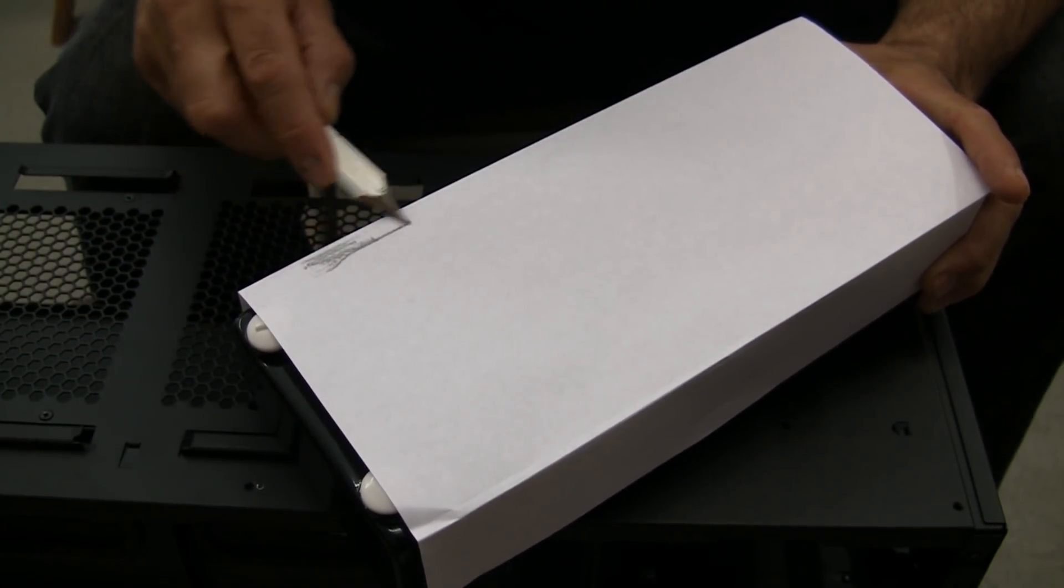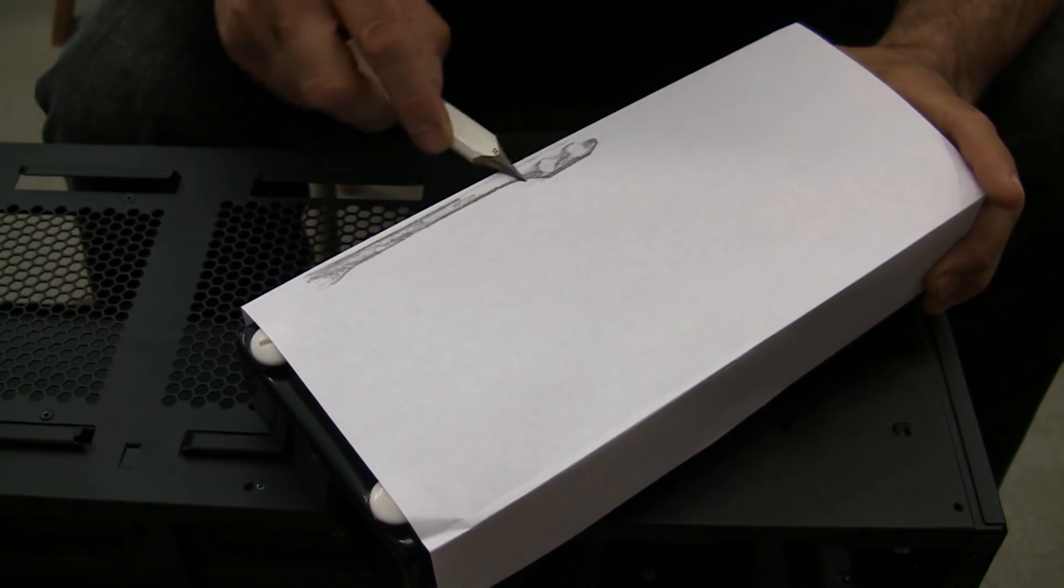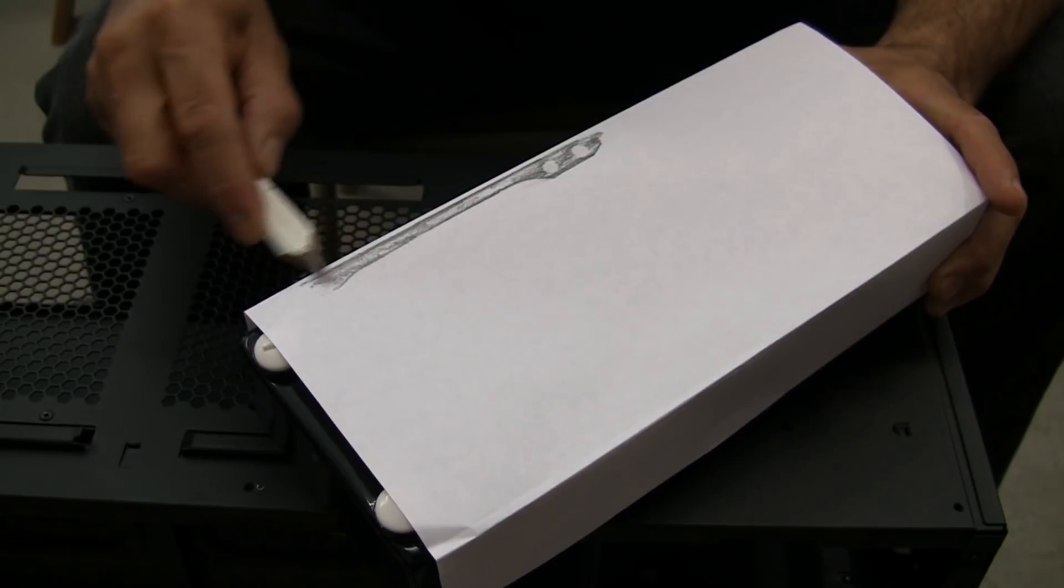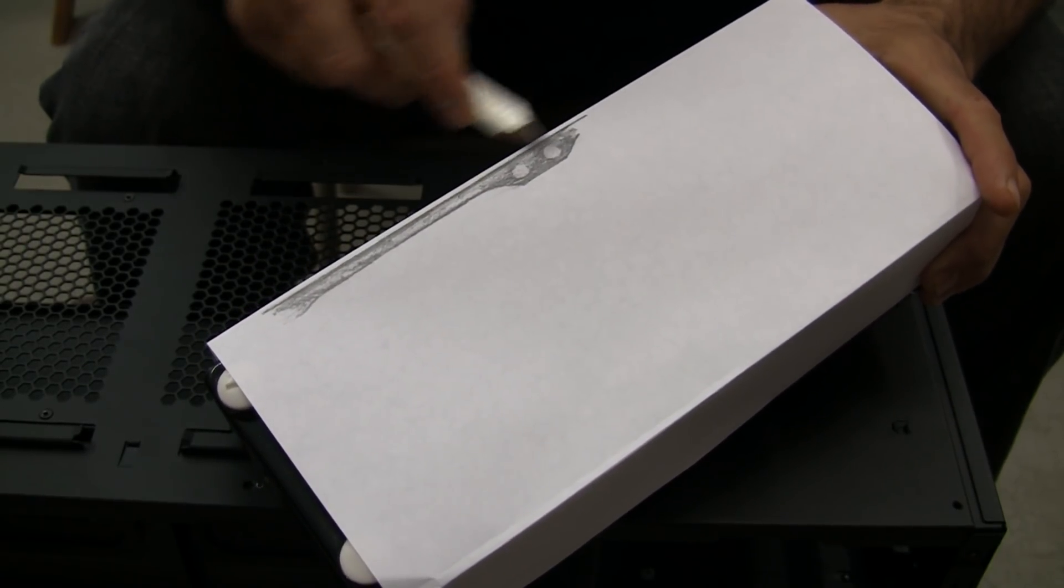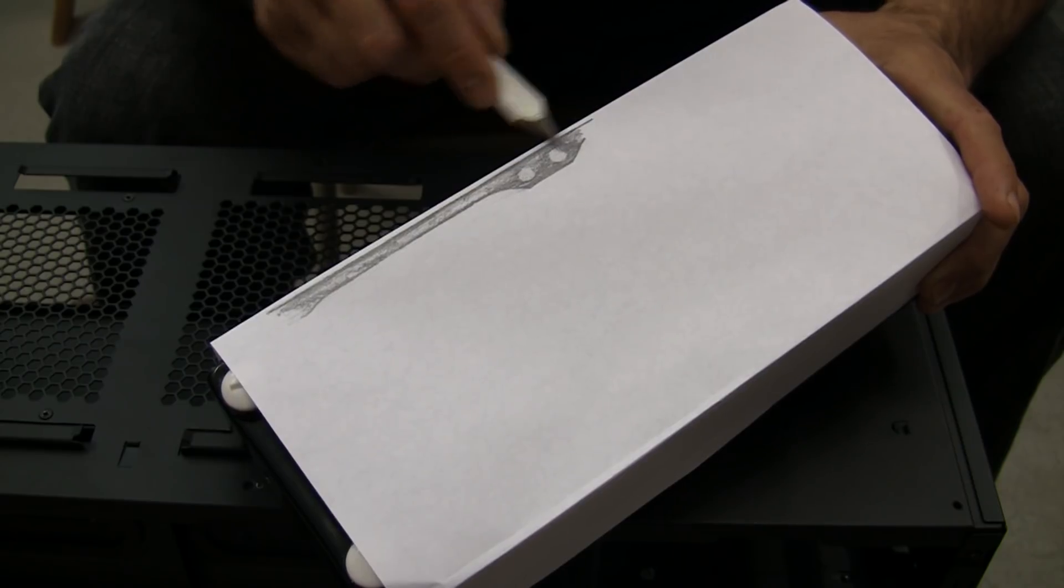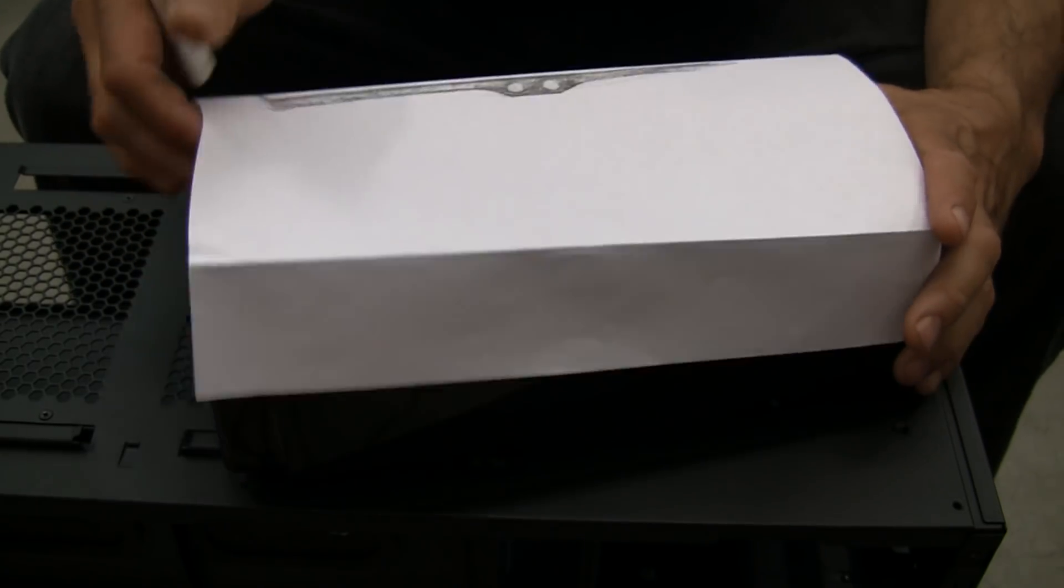What you want to do is take a regular pencil with a long lead on it and start rubbing the pencil up against the paper. It will transfer the actual outline of the rad. As you can see here as I go over that, it actually shows me where the screw holes are going to be. You just continue doing that all the way around.